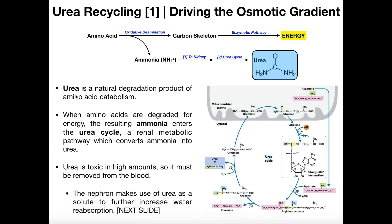Urea is a natural degradation product of amino acid metabolism. When amino acids are degraded — primarily done in the liver, but also in other peripheral tissues — amino acids have to be deaminated. They have this ammonia group, an amine functional group, that has to be removed in order to metabolize them. This process is called oxidative deamination, done through enzymes that convert the amino acid into a carbon skeleton. That carbon skeleton can then go through some enzymatic pathway and you can get energy from that amino acid. But notice in the oxidative deamination process, we get ammonia production.